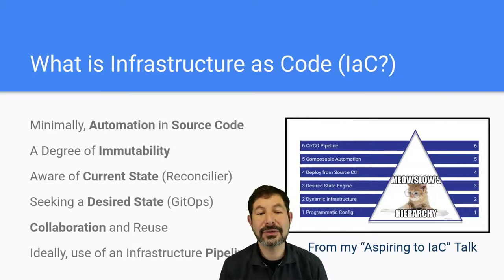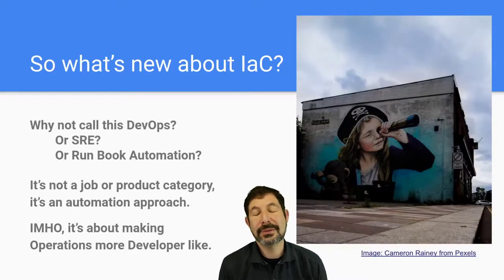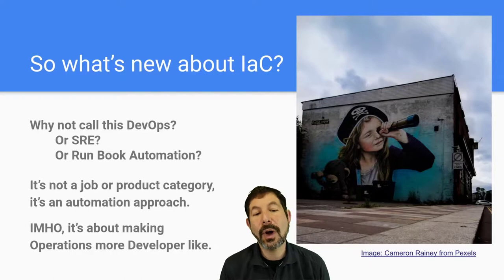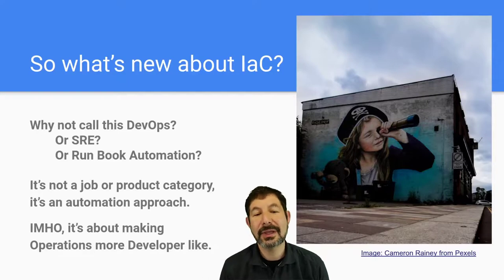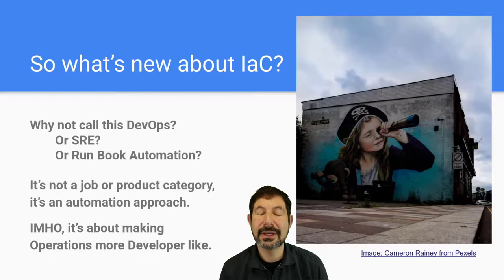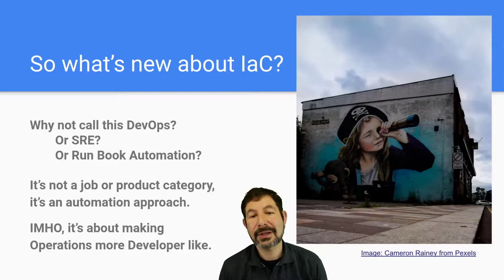I'm going to dive into those so that we have some base. But first, we need to talk about what's new in infrastructure as code, and why we don't just call this DevOps or SRE or runbook automation. The challenge here is infrastructure as code is not a job or product category — it's really an infrastructure automation approach. And that's a powerful thing to understand.